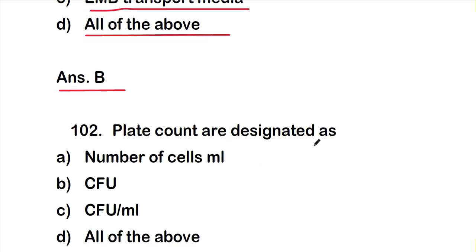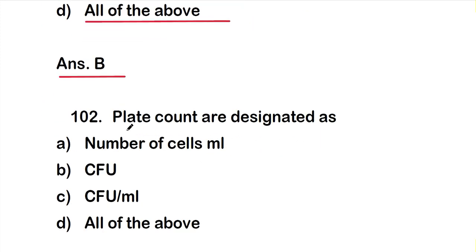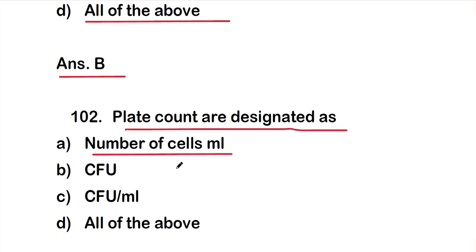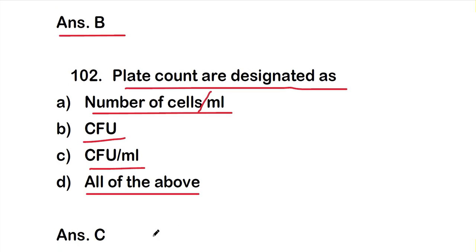Question 102: Plate counts are designated as option A, number of cells per ml; option B, CFU; option C, CFU per ml; or option D, all of the above. The right answer is option C, CFU per ml. Plate counts are designated as CFU per ml.